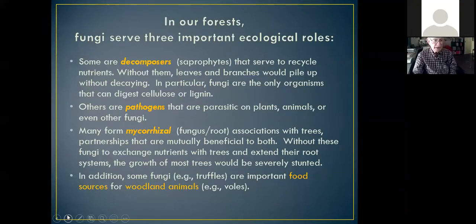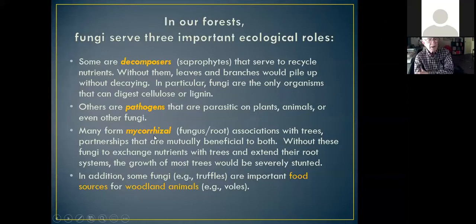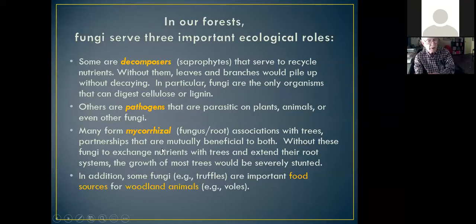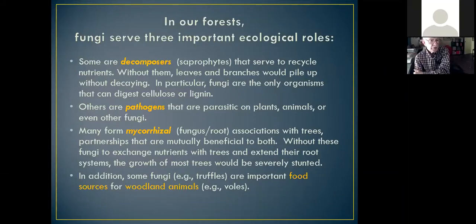The second group are pathogens — parasites on plants, animals, or sometimes even other fungi. Less familiar are mycorrhizal relationships, which are mutually beneficial partnerships between mushrooms and trees. 'Mycorrhizal' means fungus root. The microscopic filaments of the fungi surround or penetrate the roots of the tree and exchange nutrients — each gives the other something it needs. Without them, most forest trees would be severely stunted.